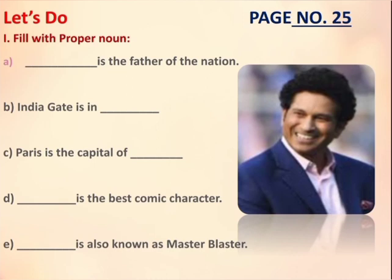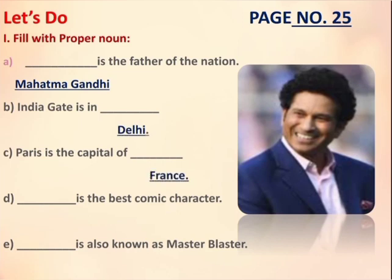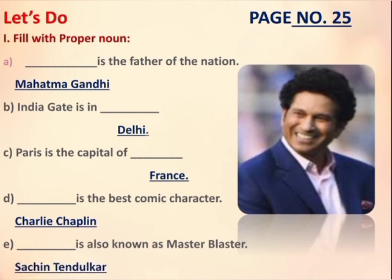So let's start. A: Dash is the father of the nation — that's Mahatma Gandhi. B: India Gate is in Delhi. C: Paris is the capital of France. D: Dash is the best comic character — Charlie Chaplin. E: Dash is also known as Master Blaster — Sachin Tendulkar.